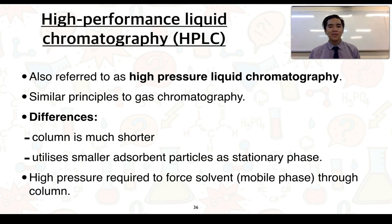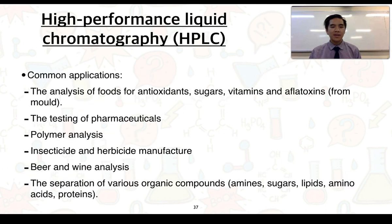Another technique is called high-performance liquid chromatography or HPLC. It can also be referred to as high-pressure liquid chromatography and it uses very similar principles to gas chromatography. Some differences include that the column is often much shorter and it utilizes smaller adsorbent particles as a stationary phase. We also use high pressure to force the solvent or the mobile phase through the column so this can happen much more quickly. Common applications include analysis of foods for antioxidants, sugars, vitamins and aflatoxins, which are human carcinogens from mold, the testing of pharmaceuticals as well as polymer analysis.